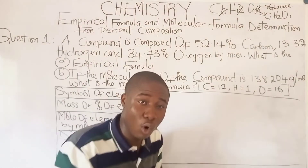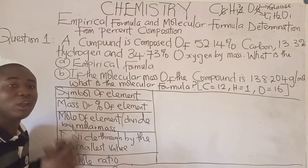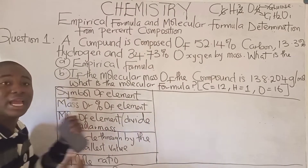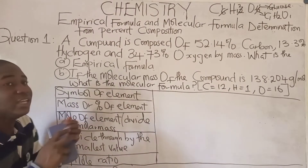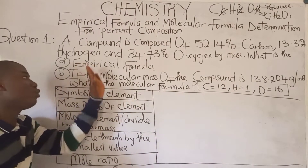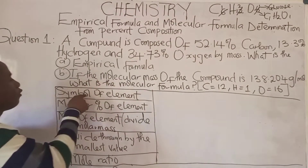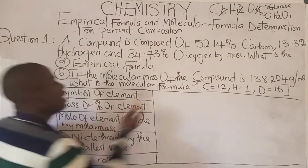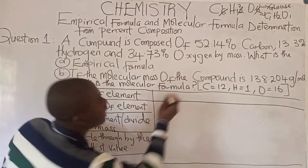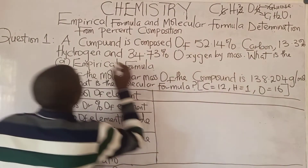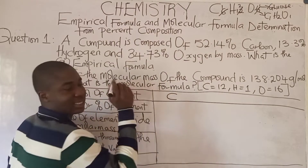They've given us the atomic masses of each element. This is a pattern — a simple way we can solve this question without stress. Writing this table here is to solve for part A first, which is empirical formula. Let's start filling in the table. The symbol of elements: what are the elements involved? We have just three — carbon, hydrogen, and oxygen.